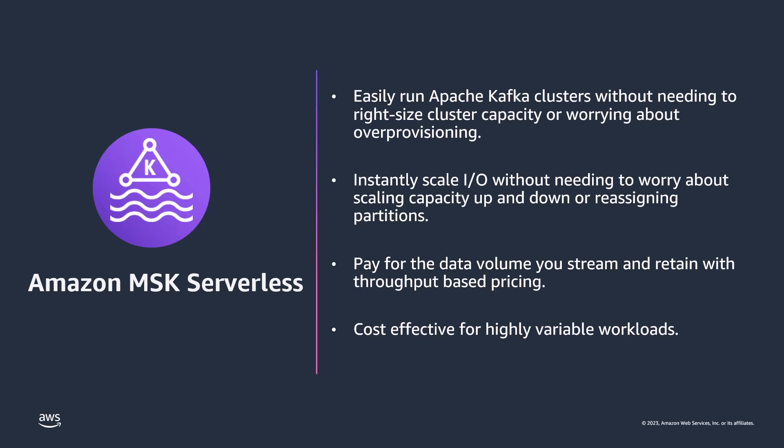Amazon MSK has two cluster types: provisioned and serverless. With provisioned, you specify how many brokers, how much storage, and other Kafka configurations based on your use case. With MSK Serverless, it is easy to run Apache Kafka without having to manage or scale cluster capacity — it automatically provisions and scales compute and storage resources. MSK Serverless offers throughput-based pricing, so you pay for the data volume you stream and retain, without worrying about idle brokers or storage capacity.